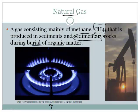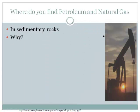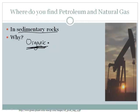This picture at the bottom shows us burning natural gas. If you've got a gas stove, it most likely burns natural gas. Now, where do you find petroleum and natural gas? You find them in sedimentary rocks. That's because petroleum comes from organic things. In this sense, 'organic' basically means dead things - something that was once alive and died, usually plants - and those plants eventually turned into oil and natural gas.